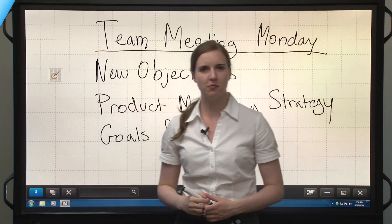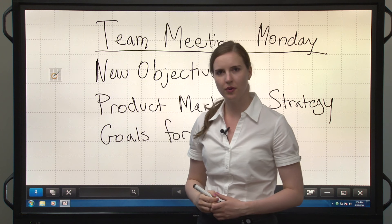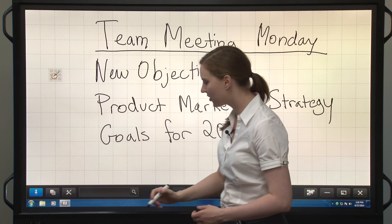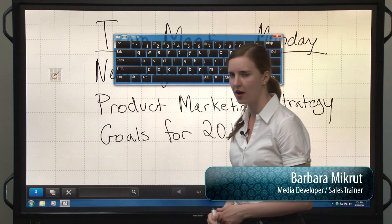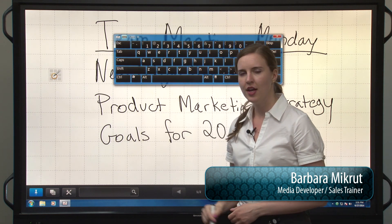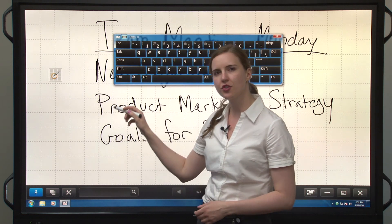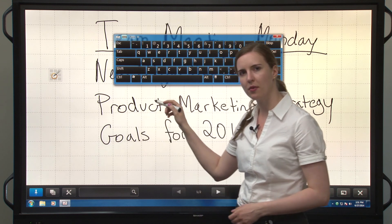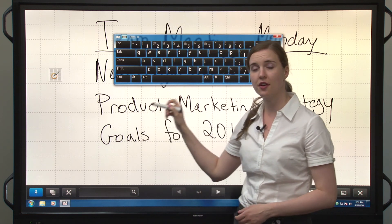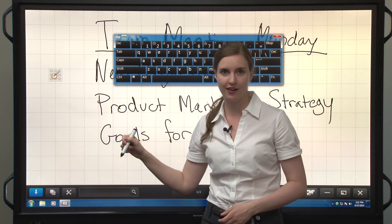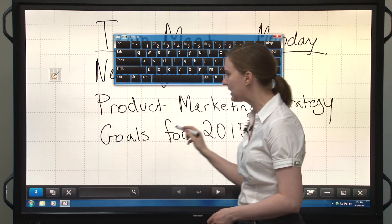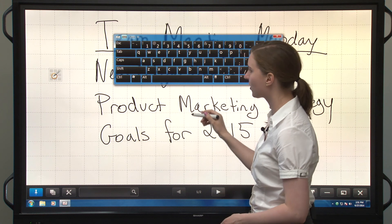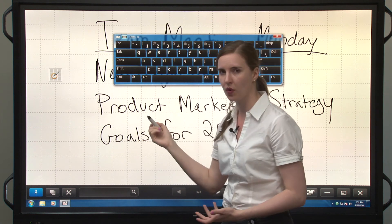One of our new tools in PenSoftware 3.0 is the search tool right here in the bottom bar. It lets you search through your document for words that are both handwritten and typed. Let's see how this works with a typed word.